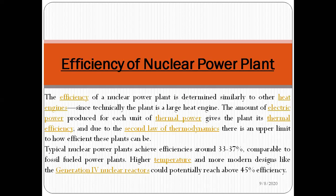The last point is the efficiency of the nuclear power plant. Efficiency is determined similarly to other heat engines - technically the plant is a large heat engine. The amount of electrical power produced for each unit of thermal power gives the plant its thermal efficiency. According to the second law of thermodynamics, there is an upper limit. Currently, nuclear power plants have an efficiency of around 33 to 37 percent, comparable to fossil fuel plants. More modern designs could potentially reach 45 percent efficiency.